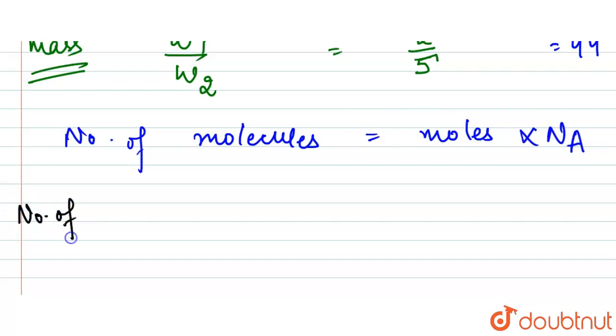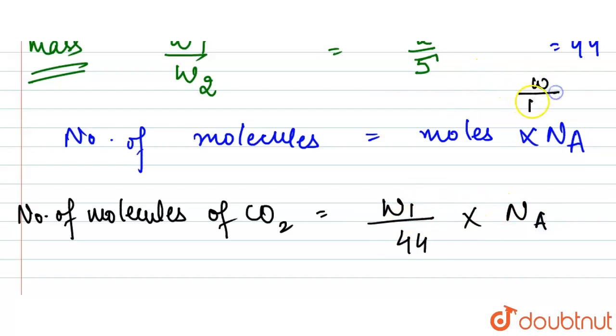For CO2, it will be: number of moles will be w1/44, that is the molecular weight, times NA. Because our moles are weight upon molecular weight, so that's what we have put here.